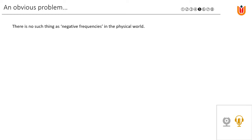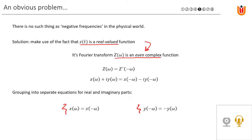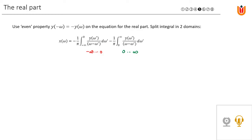This gives an obvious problem because there is no such thing as negative frequencies in the physical world. We can solve that using the fact that z(t) is a real-valued function. This tells us that the Fourier transform Z(ω) is an even complex function, meaning Z(ω) equals its conjugate Z* evaluated at minus ω. Expanding in real and imaginary components x and y, and grouping into separate equations, yields: x(ω) equals x(−ω), and y(−ω) equals minus y(ω).